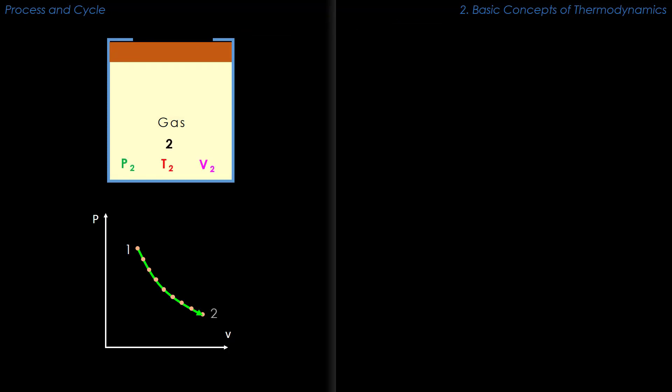then we can say that the system has executed a slow process 1 to 2 which is a locus of all equilibrium states.